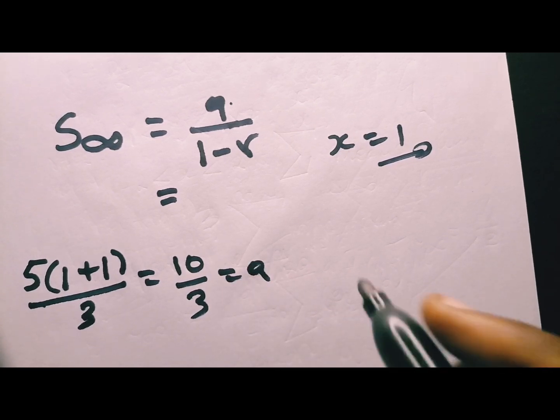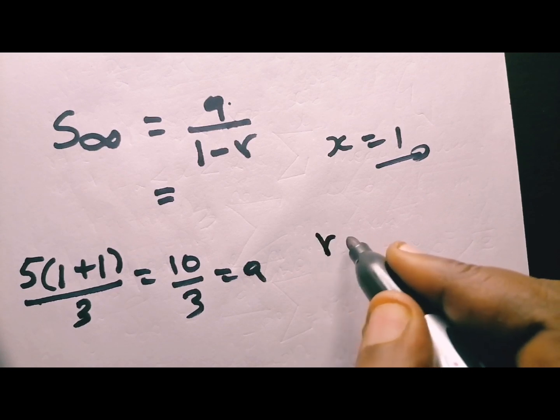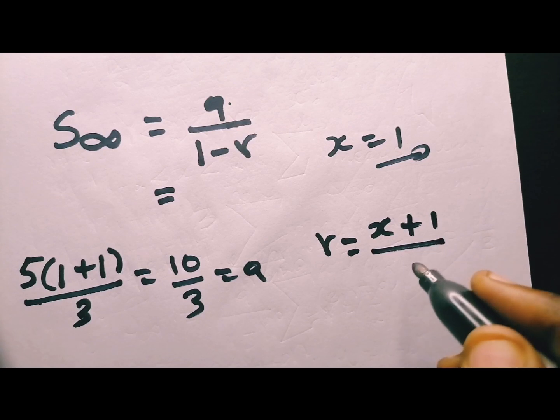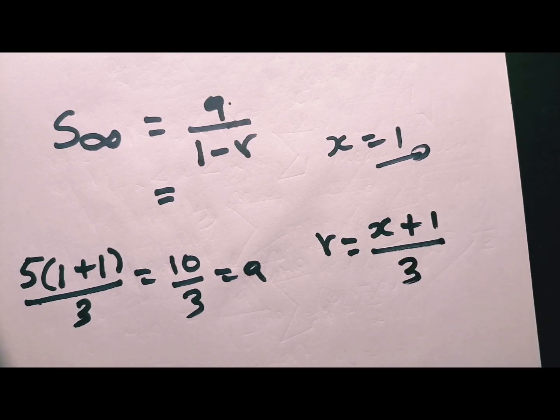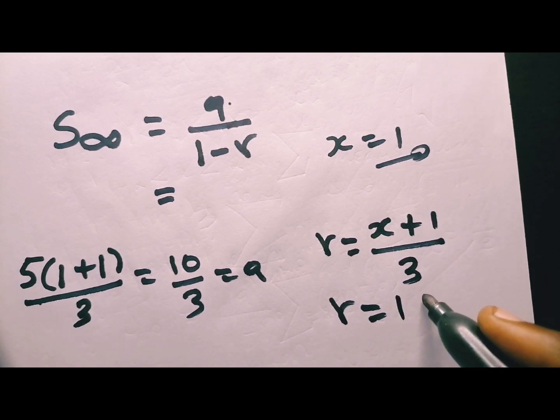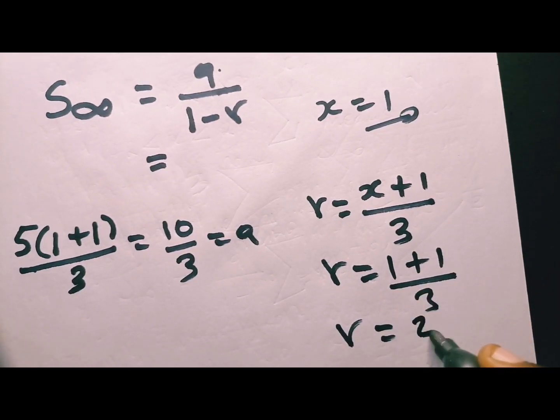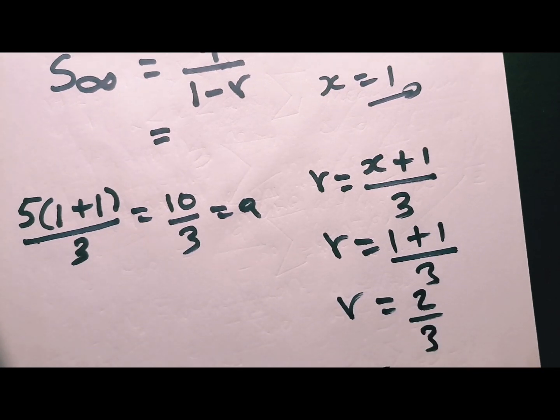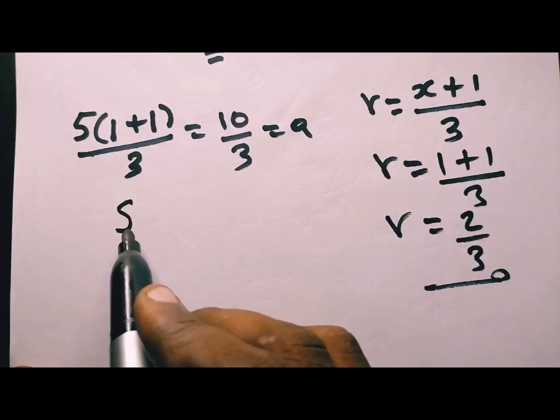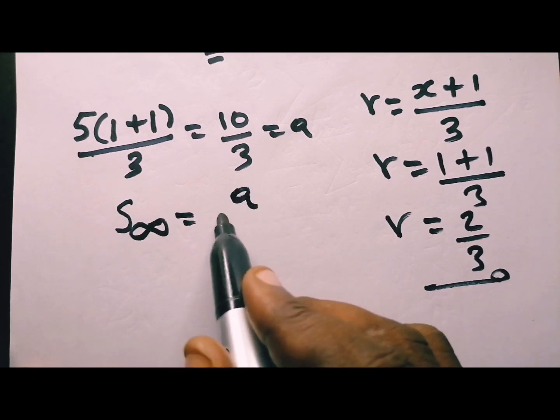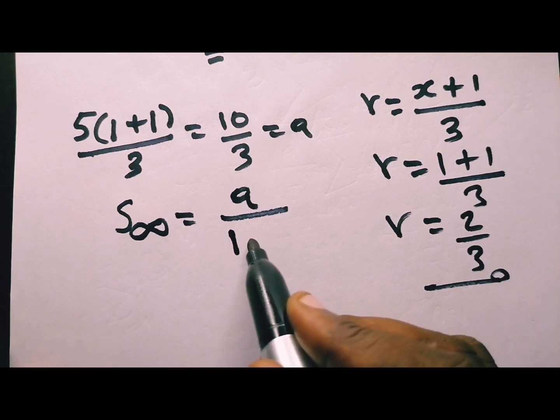And how to get r? We said r is equal to x plus 1 over 3. Which means our r is going to be r equal to 2 over 3. And then from this point you can find the sum to infinity. Remember, it's a over 1 minus r.